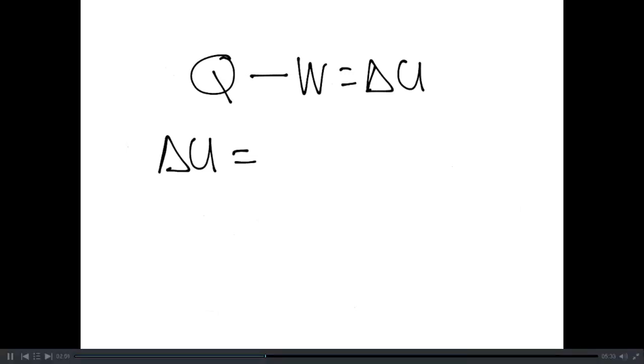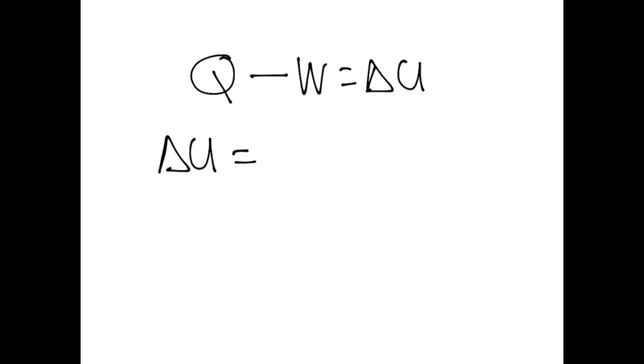In this sense, Q minus W equals delta U, being the first law. Just remember that delta U, being a state function, only depends on the initial and final state. It is going to be M times CV delta T, always, no matter what.